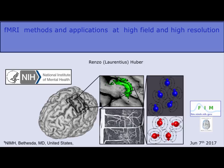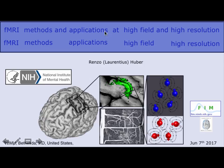I'm Renzo Huber, a visiting fellow postdoc in Peter Bandettini's group here at NIH. I'm happy to talk about the title given to me: fMRI Methods and Applications at High Fields and High Resolutions. I interpret this with a kind of exclusive 'and' for methods and applications, but an inclusive 'and' for high fields and high resolutions — so I will only cover high resolution at high fields.